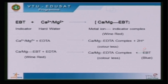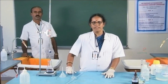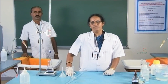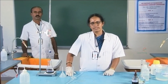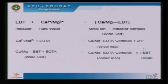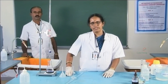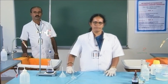Near the end point, the wine red complex is dissociated by the complexing agent EDTA, forming a colourless complex. Finally, the indicator is released. The colour of the indicator is blue; therefore, the end point is when the wine red colour changes to blue.